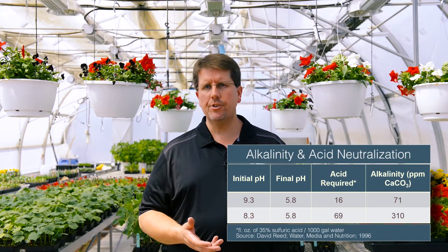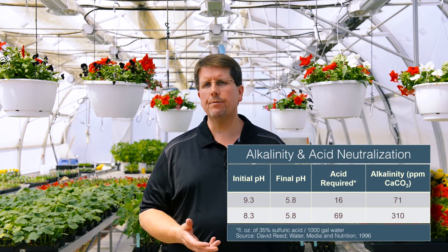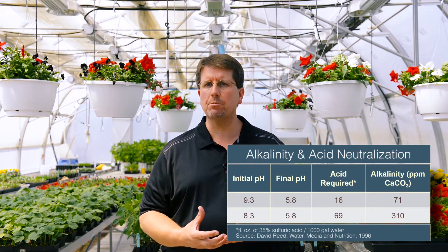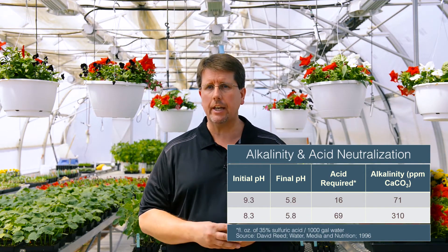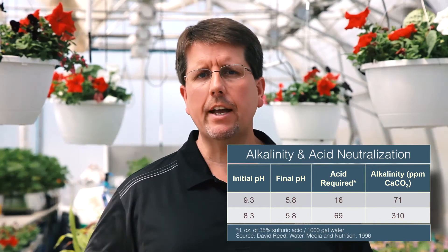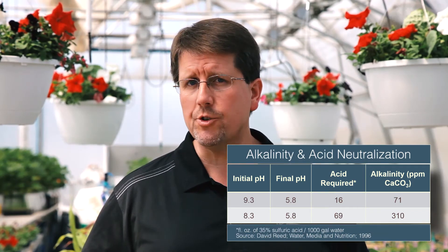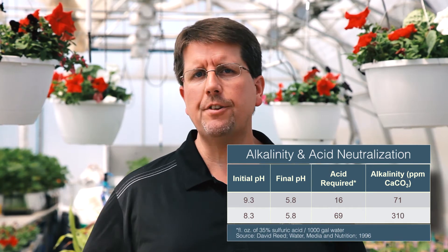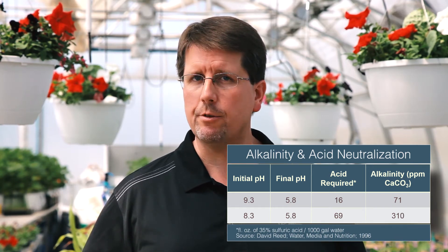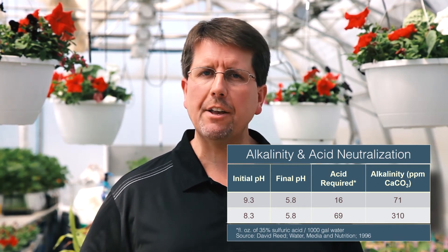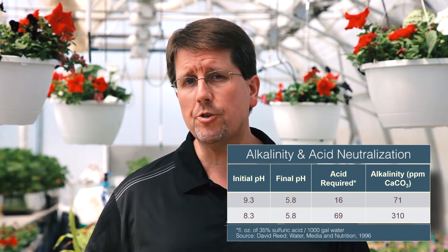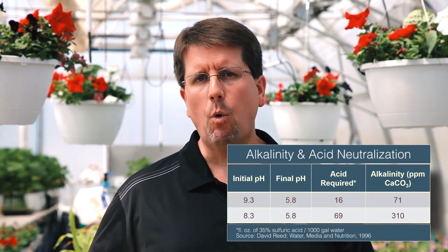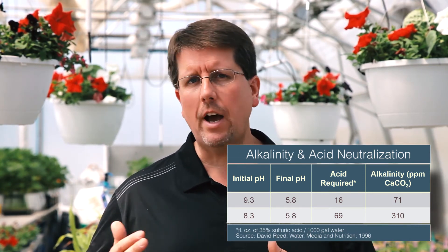As you can see on your screen, this chart shows the influence of water alkalinity and how acid neutralization takes place as far as reducing that alkalinity. Looking at the initial pH of our two water sources, we have one that starts out at 9.3 and the second one at 8.3.